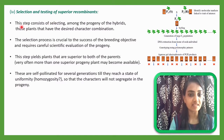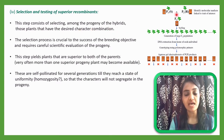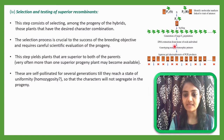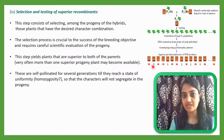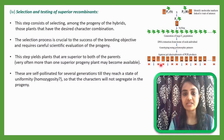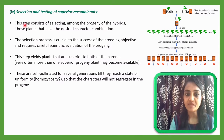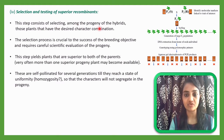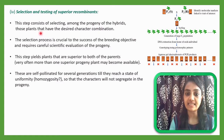The fourth step is selection and testing of superior hybrids. This step consists of selecting among the progeny of the hybrids. Out of all the progeny from the F1 generation, some will be selected which are superior while others will be rejected. Those plants that have the desired character combination are selected. The selection process is crucial to the success of the breeding objective and requires careful scientific evaluation of the progeny. Plants that are superior to both parents are identified, and these are self-pollinated for several generations until they reach a state of uniformity or homogeneity, so that characters do not segregate further in the progeny.